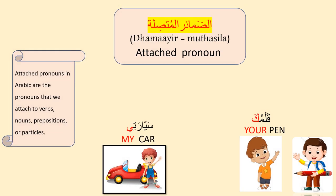Attached pronoun in Arabic is called dhamairul muttasila. Attached pronouns in Arabic are the pronouns that we attach to verbs, nouns, prepositions or particles. See the example: my car and your pen. Here, the words 'my' and 'your' are the attached pronouns. But in Arabic, the attached pronouns are not independent — they are attached to the end of the word with one or two letters. We can see dhamairul muttasila in the end of the word: ka and ee. But in English, attached pronouns are written separately.